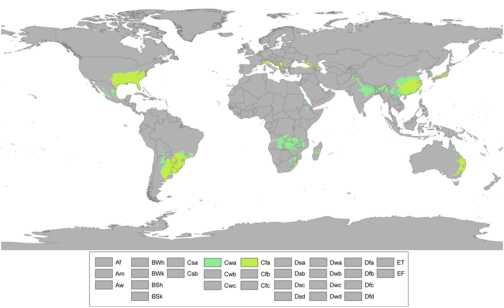Most summer rainfall occurs during thunderstorms that build up due to the intense surface heating and strong subtropical sun angle. Weak tropical lows that move in from adjacent warm tropical oceans, as well as infrequent tropical storms, often contribute to summer seasonal rainfall peaks. Winter rainfall is often associated with large storms in the westerlies that have fronts reaching down into subtropical latitudes. However, many subtropical climates such as Southeast Asia or Florida have very dry winters, with frequent brush fires and water shortages.